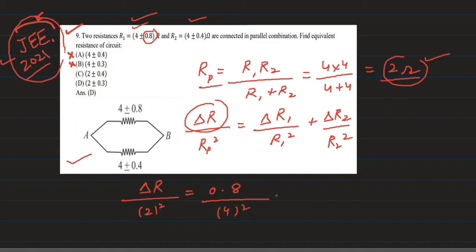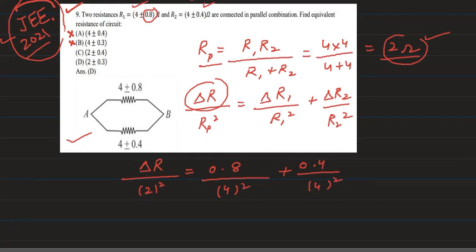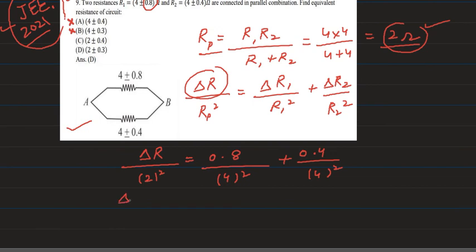So it is 4 square plus delta R2 is 0.4 upon 4 square. So we will solve this expression and after solving, we will get delta R is equal to 0.3.